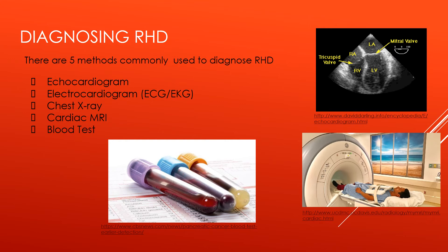There are five primary methods to diagnose rheumatic heart disease. Echocardiograms use sound waves to check the heart's chambers and valves. The echo sound waves create a picture on a screen as an ultrasound transducer is passed over the skin overlying the heart. This can show any damage to the valve flaps, backflow of blood through a leaky valve, fluid around the heart, and heart enlargement. It is the most useful test for diagnosing heart valve problems. An electrocardiogram records the strength and timing of the electrical activity of the heart. It shows abnormal rhythms, arrhythmias or dysrhythmias, and can sometimes detect heart muscle damage.